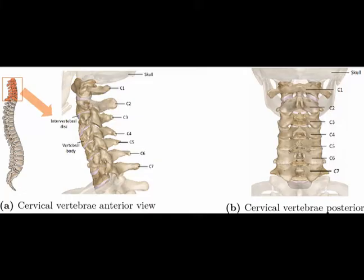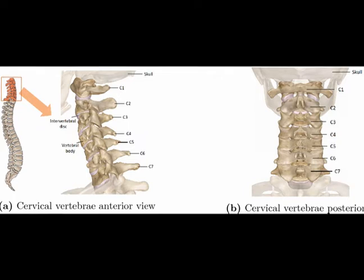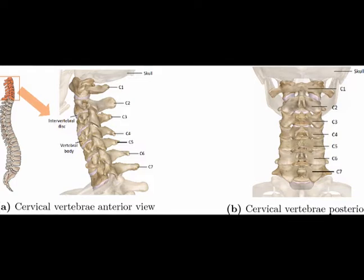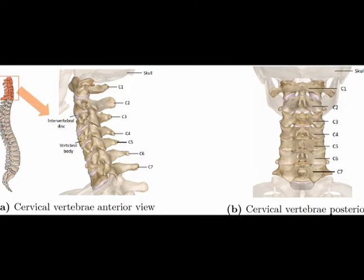The cervical spine is the medical name for the neck. The cervical spine has seven vertebrae numbered C1 through C7, starting at the top and working its way down.